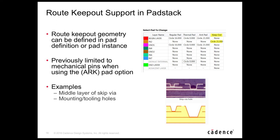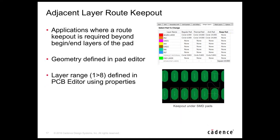Adjacent layer route keep-outs can now be added for surface mount pads, following instructions from signal integrity engineers. The librarian defines the keep-out geometry in the pad editor, and the PCB designer defines the range — how deep to go under the pad — using two properties in Allegro: adjacent layer keep-out above and below, supporting a max range of one to eight layers.